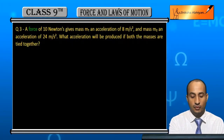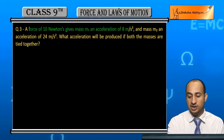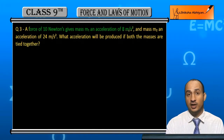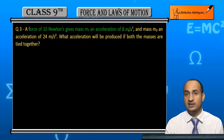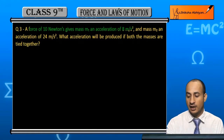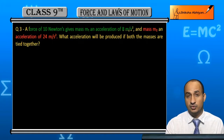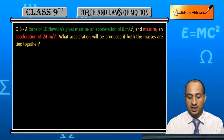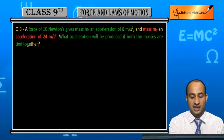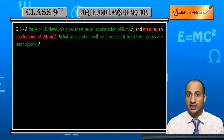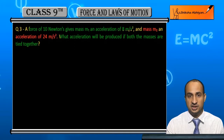A force of 10 newton gives mass m1 an acceleration of 8 meter per second square, and mass m2 an acceleration of 24 meter per second square. If both the masses are tied together, what acceleration will be produced? How much acceleration will be produced?